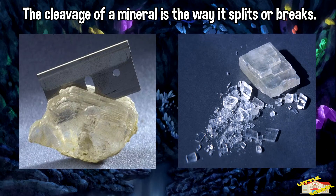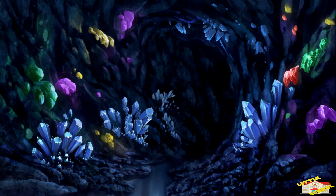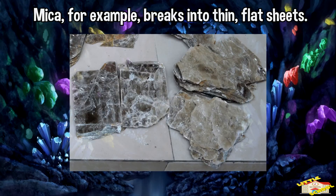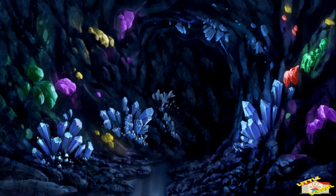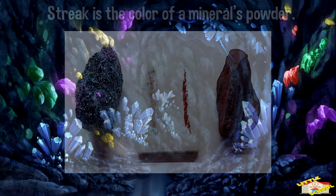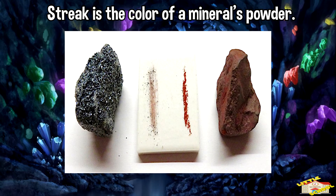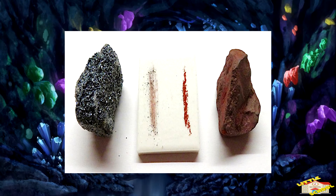The cleavage of a mineral is the way it splits or breaks. Mica, for example, breaks into thin, flat sheets. Streak is the color of a mineral's powder. Streak is produced by rubbing a piece of mineral against the surface of rough porcelain.